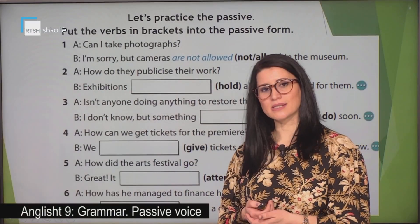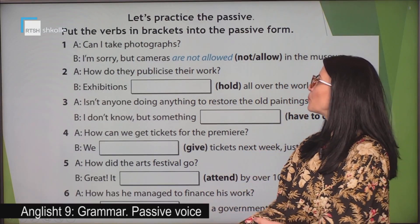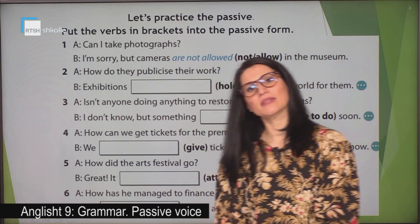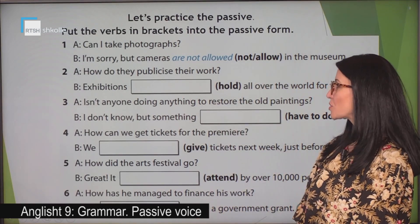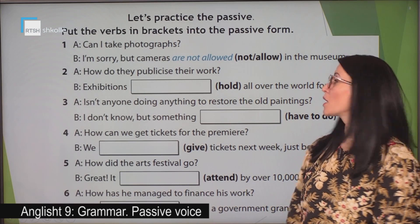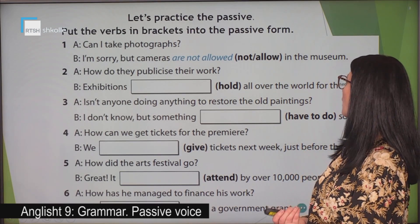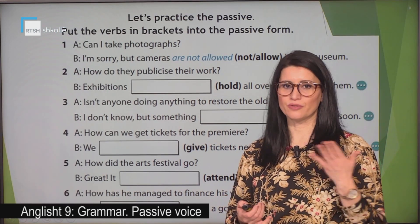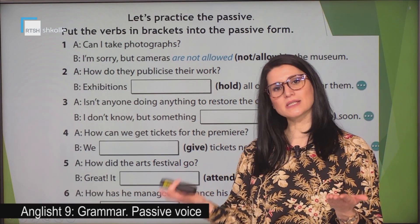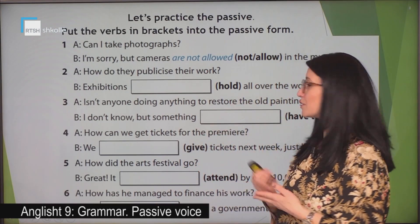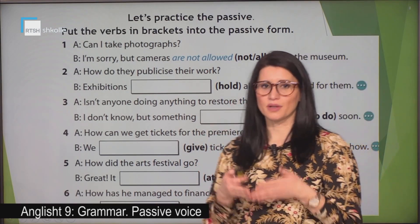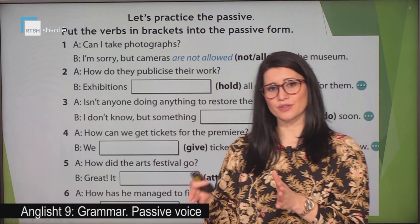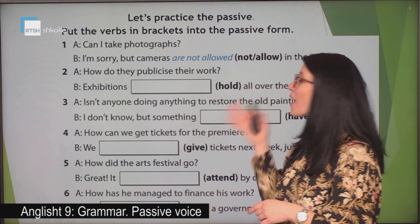Now let's practice passive in some sentences. Put the verbs in brackets into the passive form. Let's have a look at the sentences together. Can I take photographs? I'm sorry, but cameras are not allowed in the museum. The verb 'not allow' is transformed into the verb 'to be' plus the past participle of the verb. Here we have a negative form — the word 'not' stays near the verb 'to be'. We can even say 'aren't allowed'.